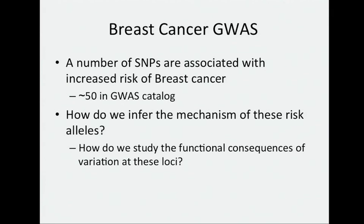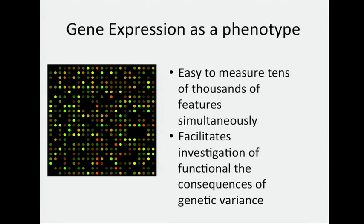A question you might ask is: how do we infer the mechanism of these risk alleles, or how do these alleles lead to an increased risk of breast cancer, and what's the means by which we can understand how variation of these loci has a functional consequence? Using the EQTL framework, we treat gene expression as a phenotype. Using gene expression profiling methods such as RNA-Seq or microarray, we can easily measure tens of thousands of features simultaneously, which facilitates the investigation of the functional consequences of genetic variants at these loci.